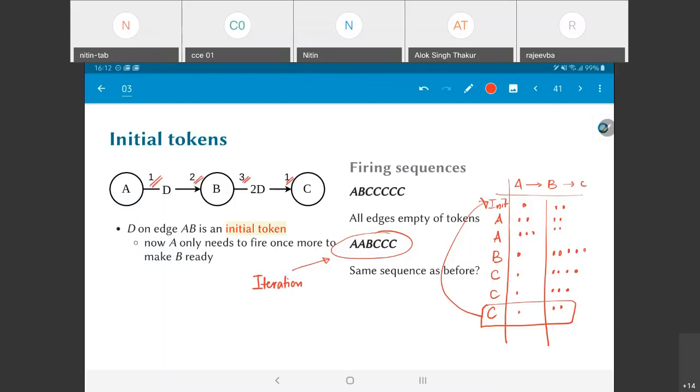You might be wondering, A is fired twice so it looks as though some processing is happening with two samples. B is happening only once, C is happening three times. Typically this kind of modeling is used primarily for modeling so-called multi-rate signal processing systems.